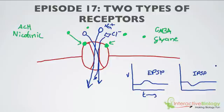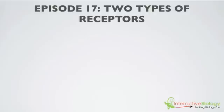So this is a really fast-acting process: neurotransmitter binds, channel opens, ion rushes in. Let's go to the next type of receptor, and that's called the metabotropic receptor.